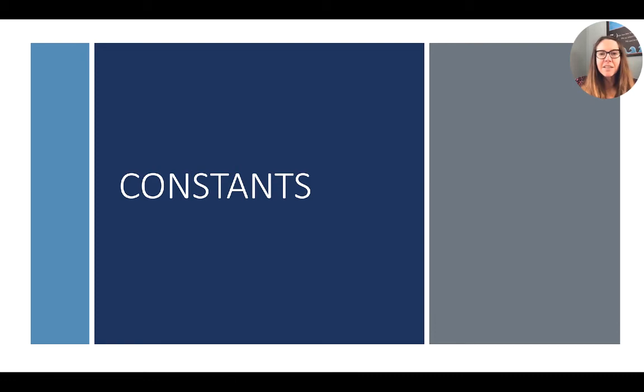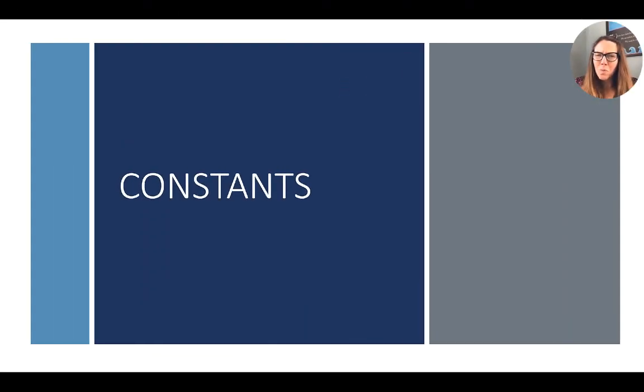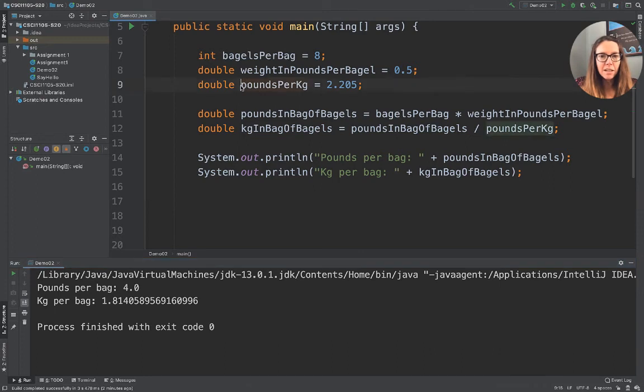The next piece is constants. Sometimes there are things that never change. Right here, we've got poundsPerKilogram. That is something that will not change. It's like gravity or pi. These things won't change, and so we don't want people to be able to make changes to them. And the way that we do that is when we define the variable, we label it as final. And after that, that value can never be changed. So when you initialize it, you cannot then later use an assignment statement and update poundsPerKilogram.